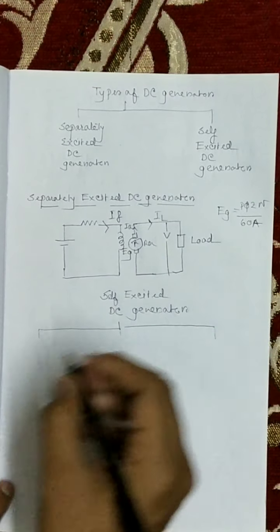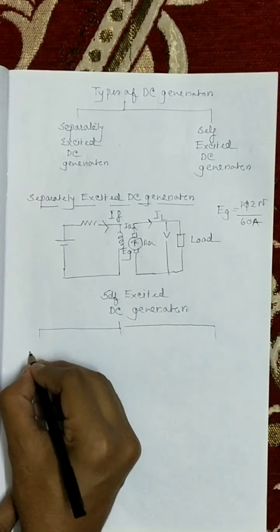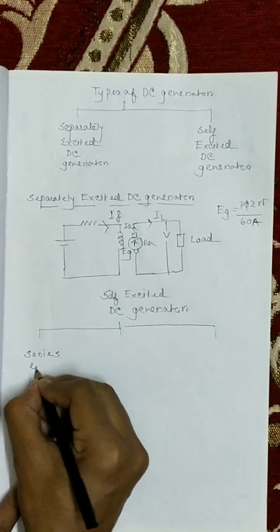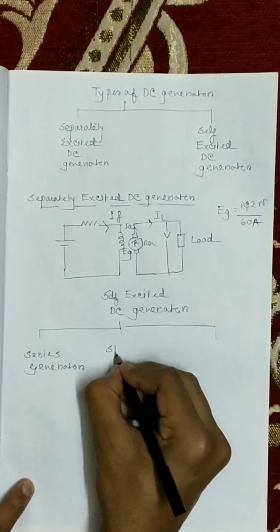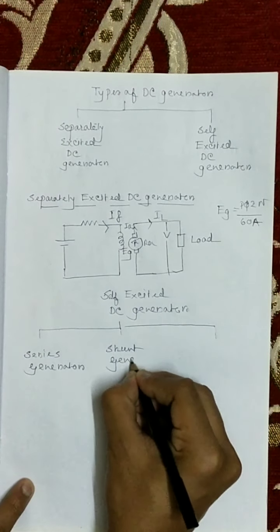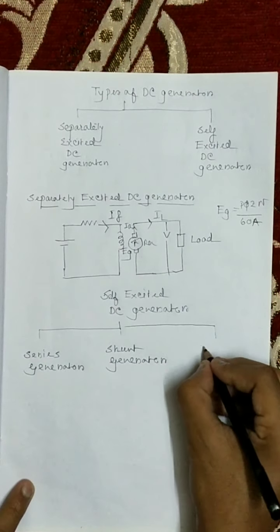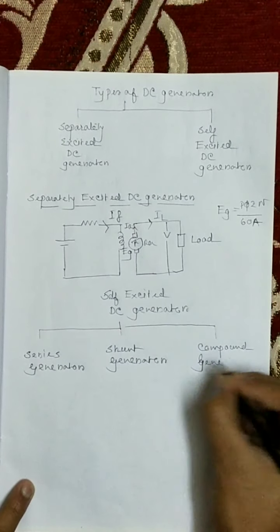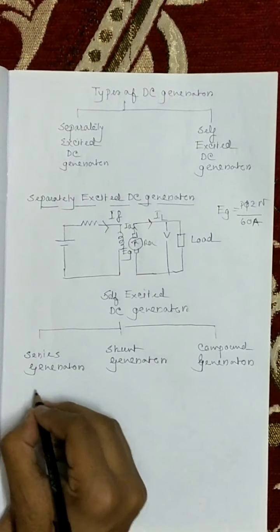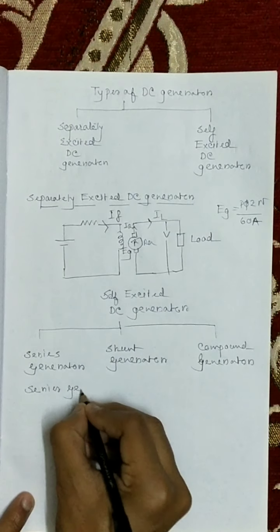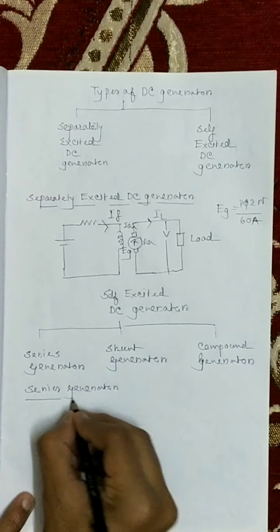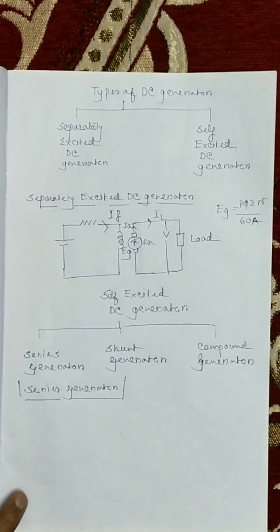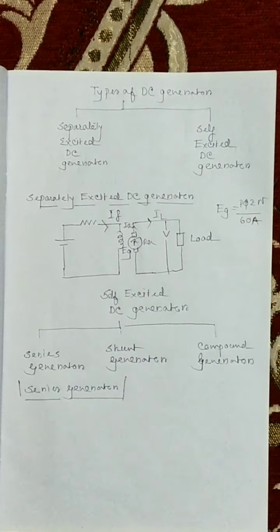Self-excited DC generators are of three types: first is series generator, second is shunt generator, third is compound generator. In a series generator, the field winding is connected in series with the armature winding, so that the whole armature current flows through the field winding as well as the load.